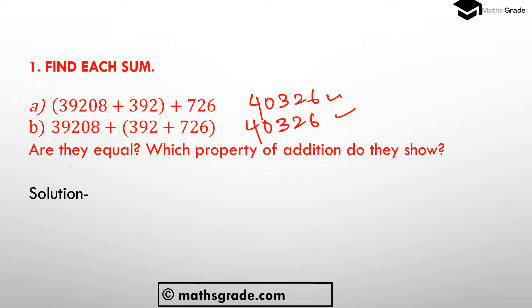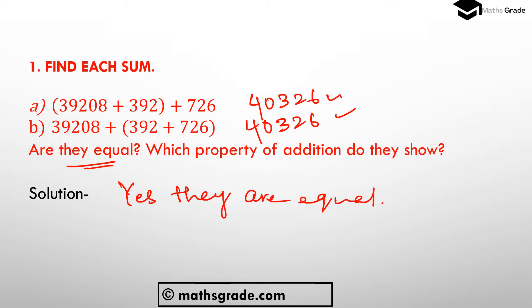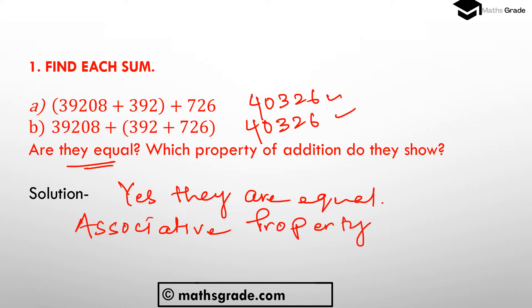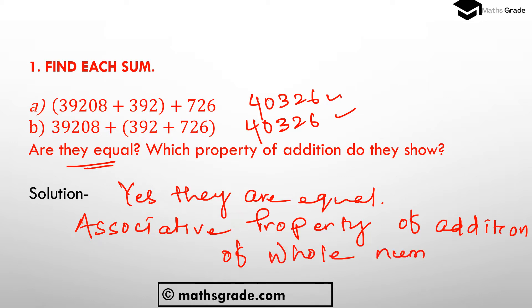Both addition sentences give 40,326, so they are equal. This property is called the associative property of addition of whole numbers.